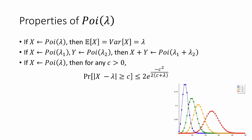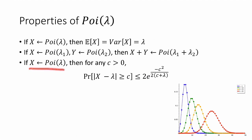Here are a few nice properties of Poisson random variables — it's a good exercise to verify these. First, if x is a Poisson random variable with parameter lambda, then the expected value of x equals the variance of x, which equals lambda. Second, if x and y are independent Poisson random variables with parameters lambda 1 and lambda 2 respectively, then their sum x plus y is also a Poisson random variable with parameter lambda 1 plus lambda 2.